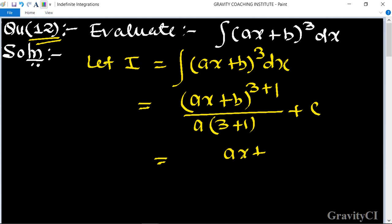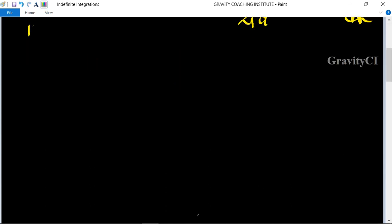= (ax + b)⁴ upon 4a, which is the required answer. Second method: